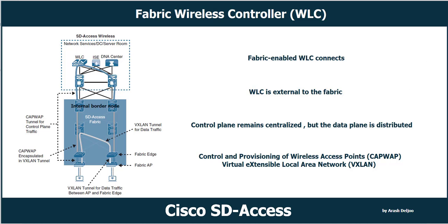The fabric wireless controller or WLC is an external device compared to the SDA fabric. A fabric-enabled wireless LAN controller connects APs and wireless endpoints to the SD Access fabric. The wireless LAN controller is external to the fabric and connects to the SD Access fabric through an internal border node — the border node that connects other components of our company to the SDA fabric. We have two internal border nodes that connect services like DNA Center, ISE, and the wireless LAN controller.